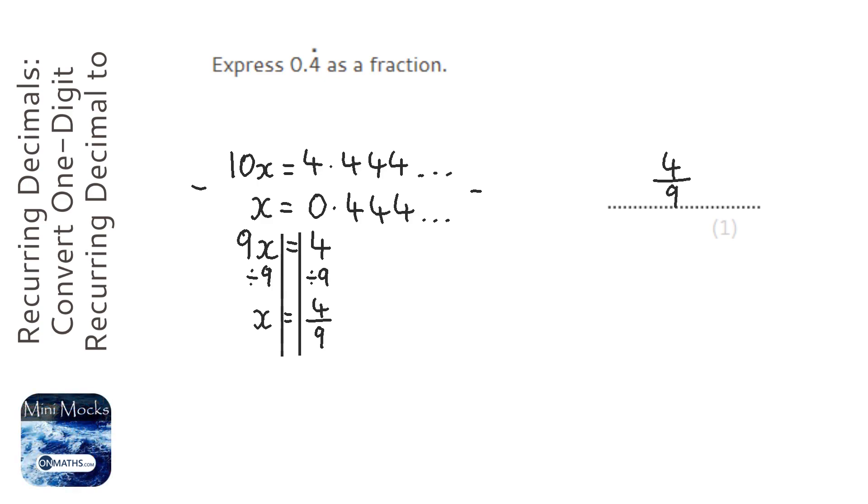So if you have one repeating number, it's just that number over 9, and be careful to cancel. So if it's 3 over 9, it's a third.